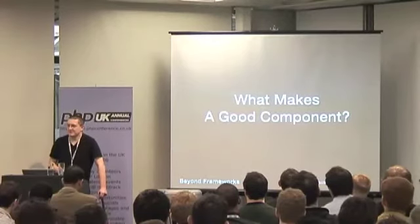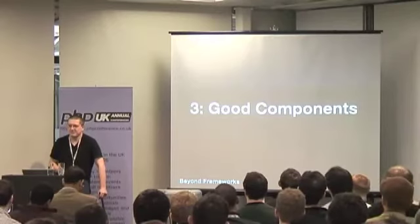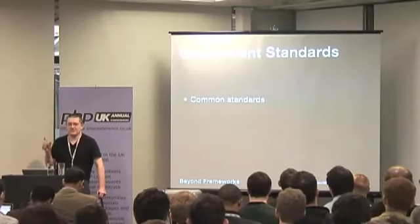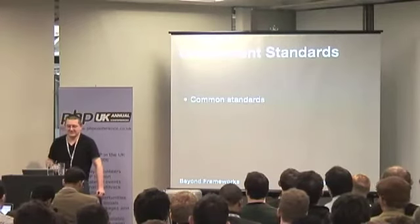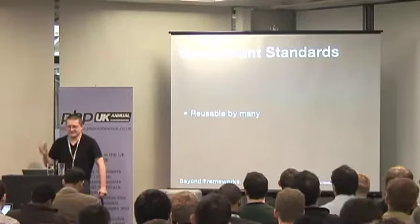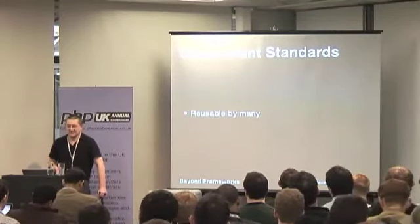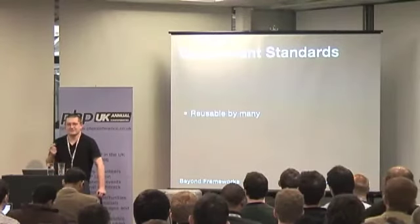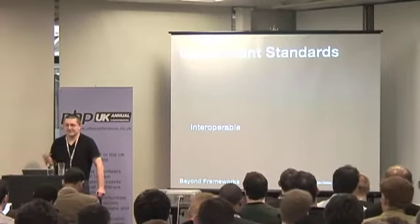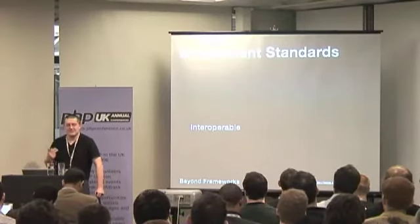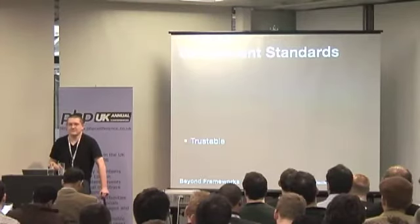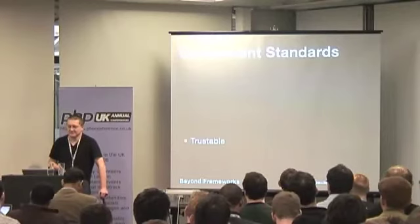I've talked a lot about components but haven't really explained what's inside them. Let's look at what makes a good component. First, you've got to set common standards that you apply across every component you build — this allows components to be reused by many developers in your business. If every component is completely different, designed and built and shipped differently, you'll spend a lot of time just pulling components in rather than focusing on the benefit of reusing them. Most importantly, the components have to be trustable — otherwise no one is going to reuse them; they'll write their own instead and you're back to reinventing the wheel.